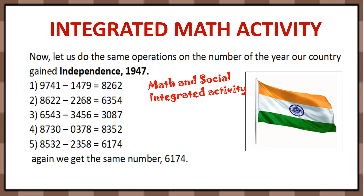This can be taken as an integrated math activity with social studies subjects, especially for remembering years. For example, you can ask in which year India gained its independence — 1947. Give students an event and a year, and ask them to find out after how many iterations they get the mysterious number 6174. It will be great fun. You can also give it as a group activity, using important years from the social studies textbook. For some numbers it may take 2 iterations, for others up to 8 — that's about 4 to 5 subtraction problems per class. You can also use students' birth years like 2012 or 2014.